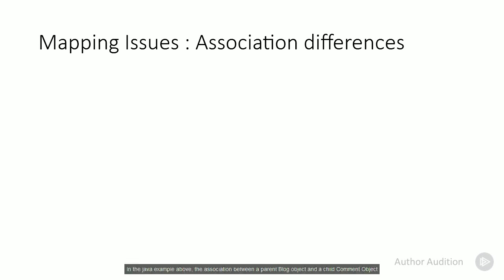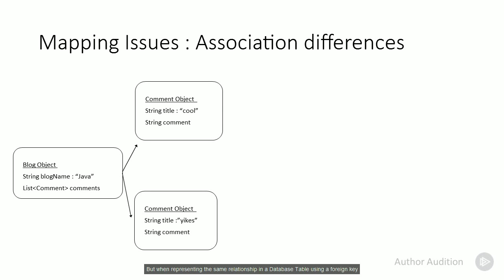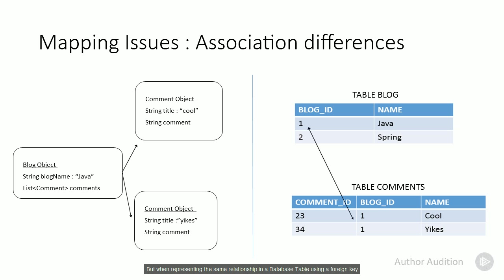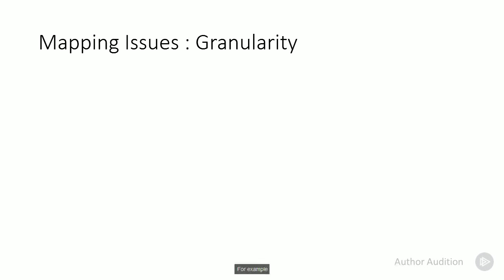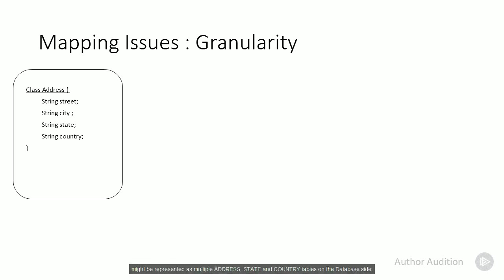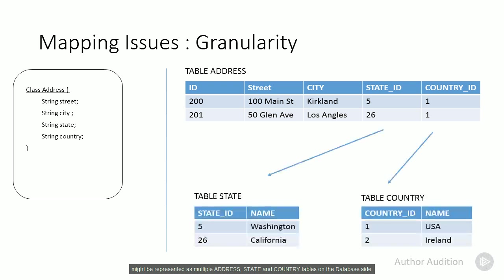More complex mapping issues can be seen when comparing the structural differences between tables and Java object graphs. In the Java example above, the association between a parent blog object and a child comment object is a one-way reference. But when representing the same relationship in a database table using a foreign key, the association is a bi-directional relationship. Another mapping issue occurs when there's a big difference in granularity — for example, a single address class on the Java side might be represented as multiple address, state, and country tables on the database side.